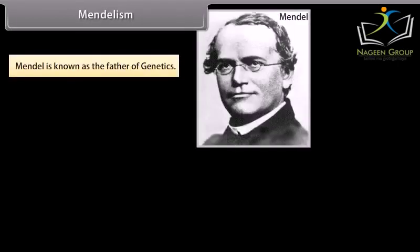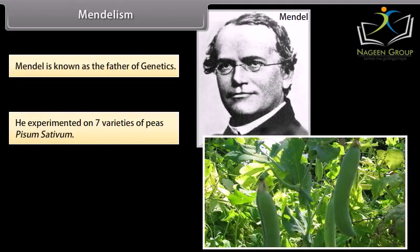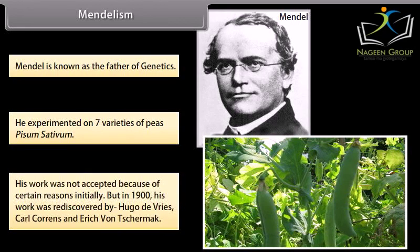Mendelism. Mendel is known as the father of genetics. He experimented on seven varieties of peas, Pisum sativum. His work was not accepted initially, but in 1900 his work was rediscovered by Hugo de Vries, Karl Correns, and Eric von Tschermak.